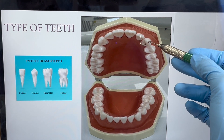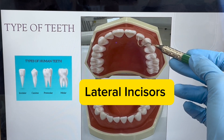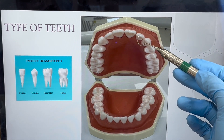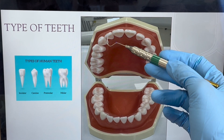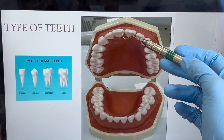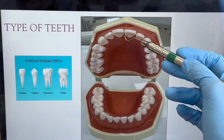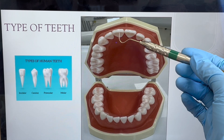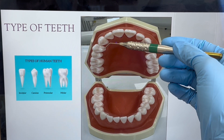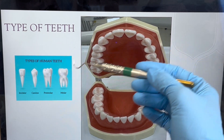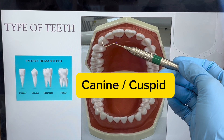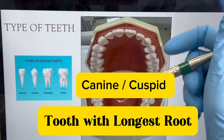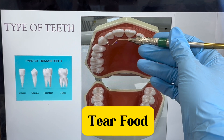The ones next to the centrals are called lateral incisors — lateral because they are on the side, next to the central. You will have the same type of teeth on the right side and the left side of the patient, and in all quadrants. Now, the corner teeth are called canines. The canine has one cusp — that's how you can identify it — and they have the longest root. Canines are used to tear food.